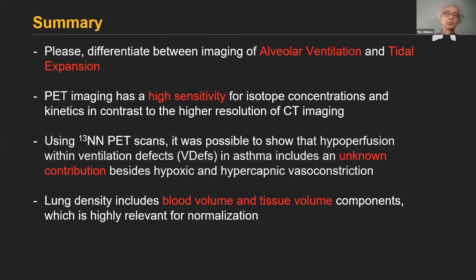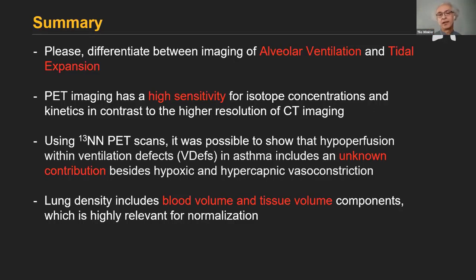As a summary: please differentiate between imaging of alveolar ventilation and tissue expansion — it's important to keep the two concepts separate. PET imaging has high sensitivity for isotope concentration and kinetics in contrast to the higher resolution of CT imaging. Using nitrogen-13 PET scans, it was possible to show that hyperperfusion in ventilation defects in asthma includes an unknown contribution beyond hypoxic vasoconstriction, potentially related to vessel deformation or dynamic hyperinflation. And remember that lung density includes a component of blood volume, which could be highly relevant if lung density is used as a surrogate for tissue volume in normalizations.